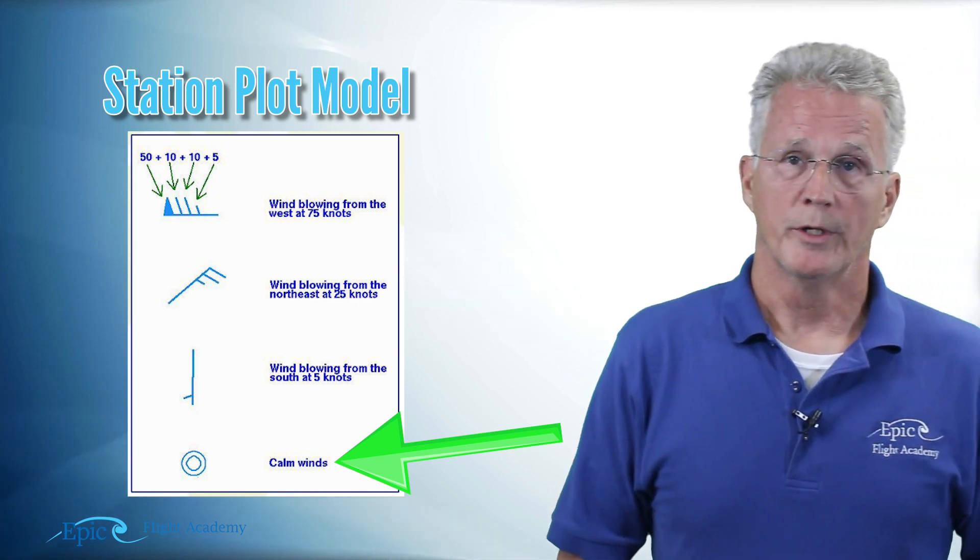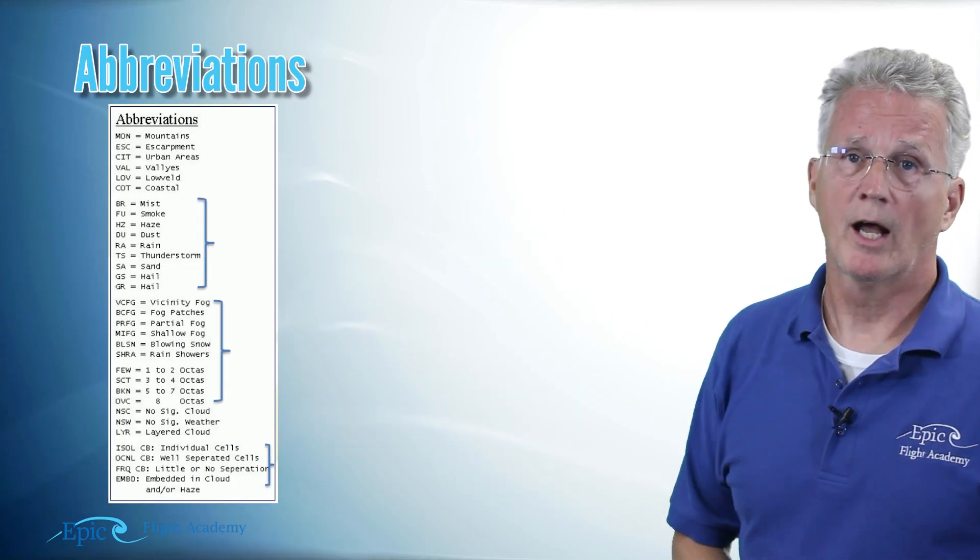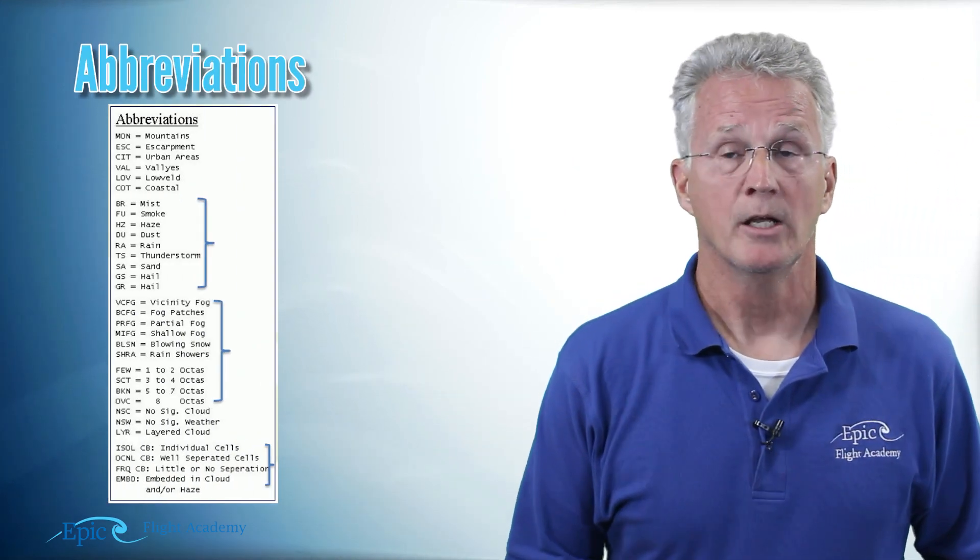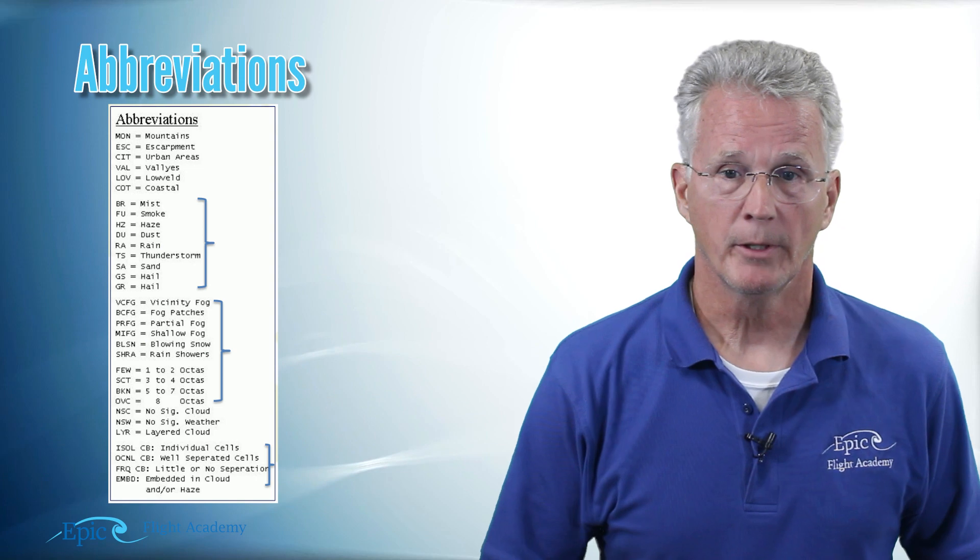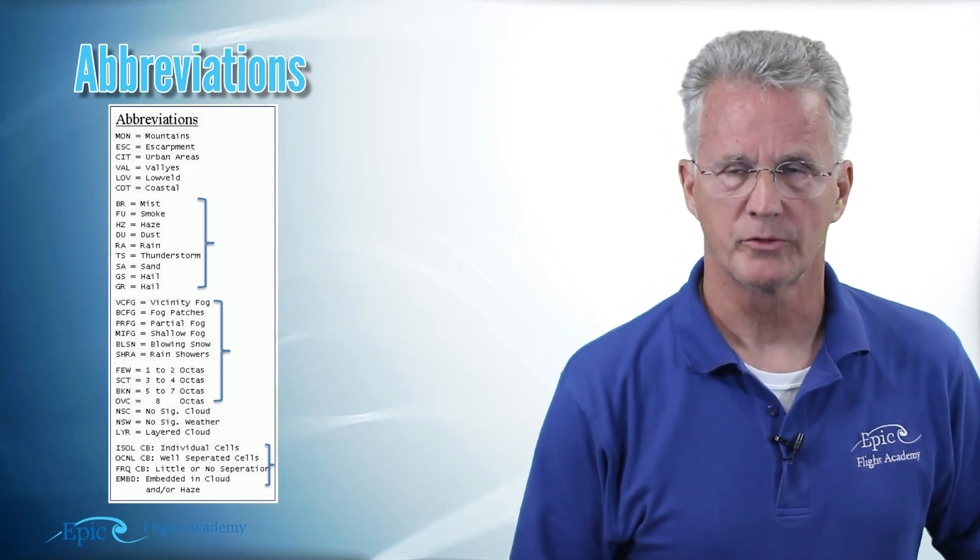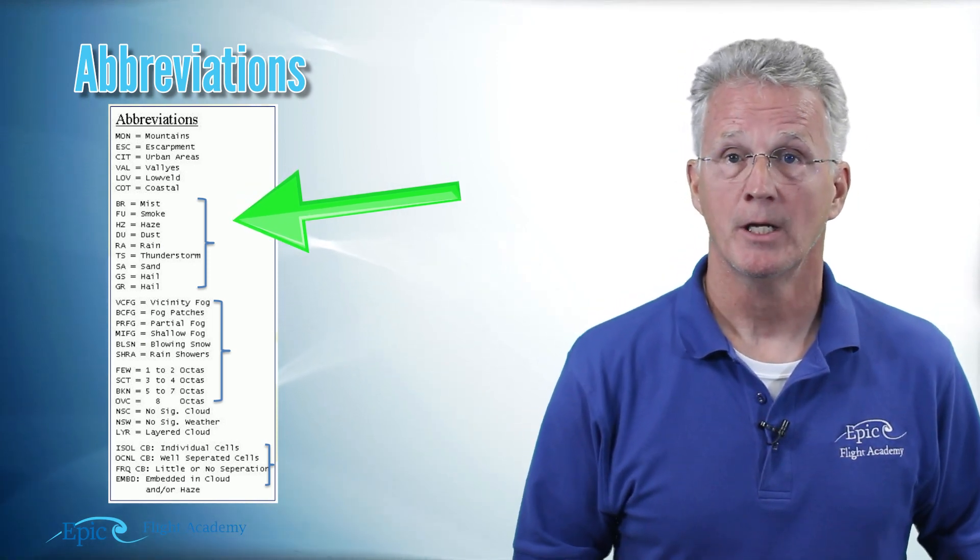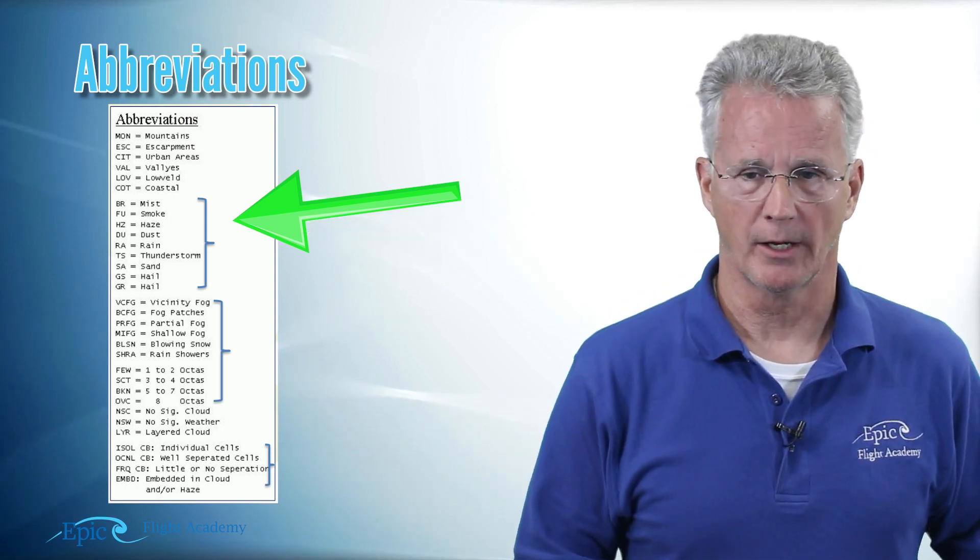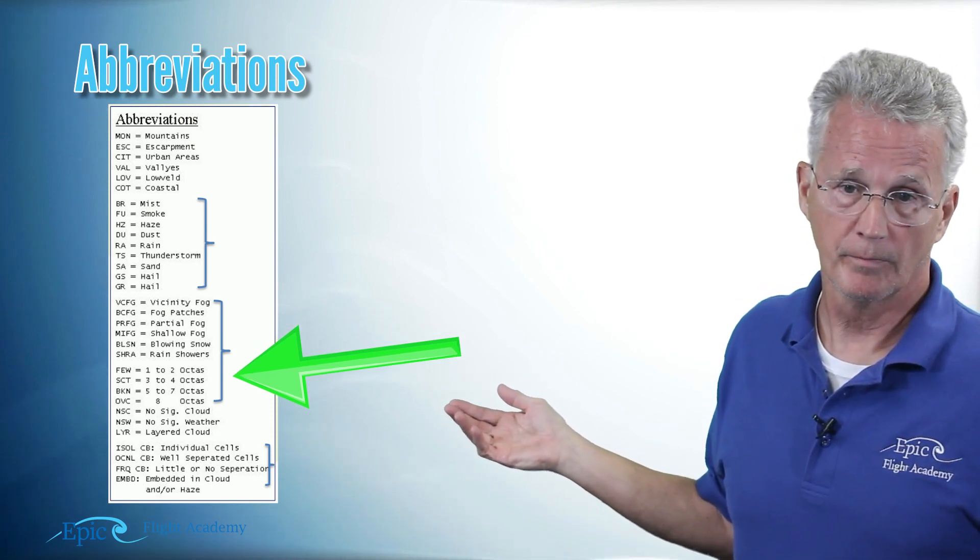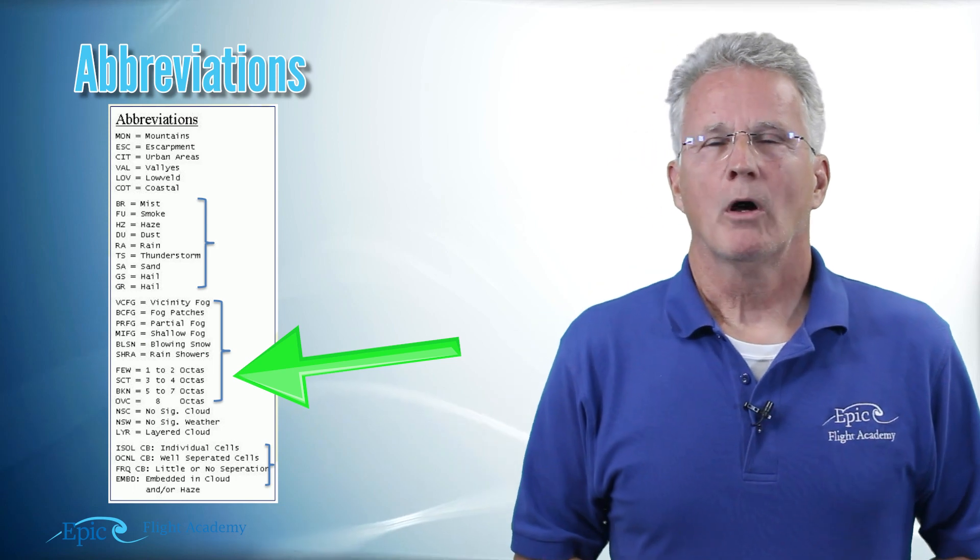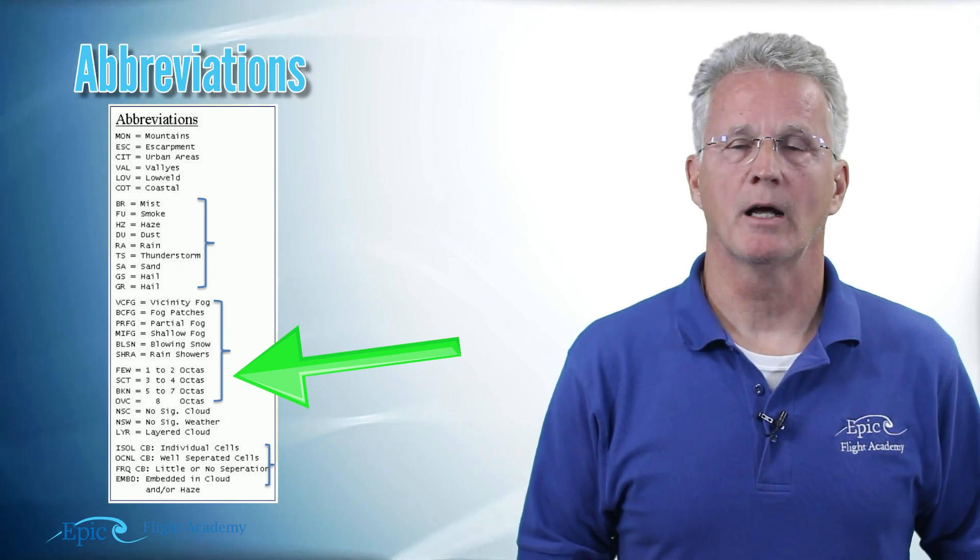The next example is this list of abbreviations. Now I don't want to go through all of those individually. Again, you're going to refer to your text and the AIM and work with your flight instructor. But notice a couple of common ones. For example, mist is BR, smoke is FU, haze HZ. Do you see those? The ones that I do want to point out are towards the bottom of the list where it says few, scattered, broken and overcast.